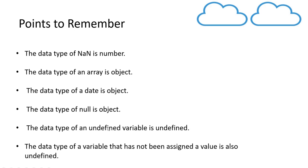The data type of an undefined variable is undefined. The data type of a variable that has not been assigned a value is also undefined, because in the memory component JavaScript assigns it as undefined. This was covered in the execution context video, which is the second video in this playlist and is very important.